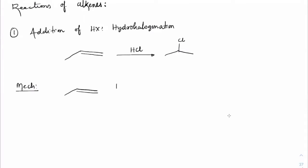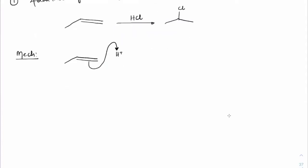The double bond reacts with H⁺ (the solution is acidic so H⁺ is available). The π bond has nucleophilic character — it is an electron-rich cloud — so π attacks H⁺. This can go through an electromeric effect (the 0th step), where minus and plus develop. Usually in mechanisms the 0th step is not written, but the electromeric effect is understood to occur.